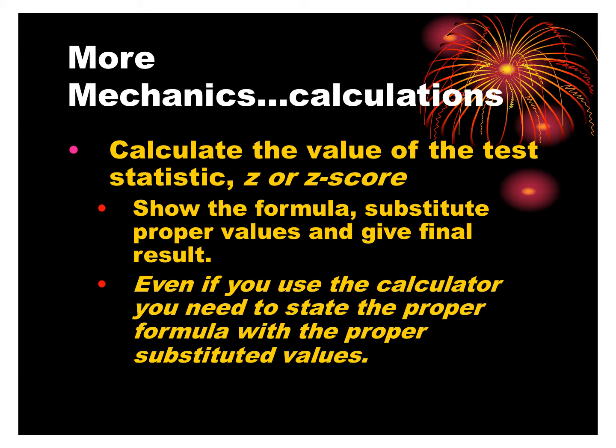To find the p-value, we calculate the test statistic — the z-score — which we've calculated before. We show the formula, substitute the proper values, and give the final result. Even if we use the calculator, it's important to show the values with numbers plugged in, because if we make a calculator mistake but have the data on paper correctly, there's grace — we could still get full credit.